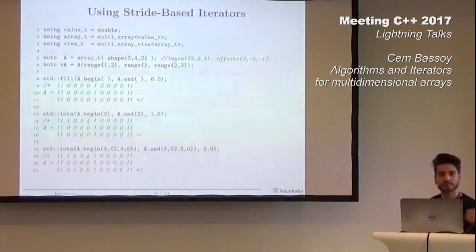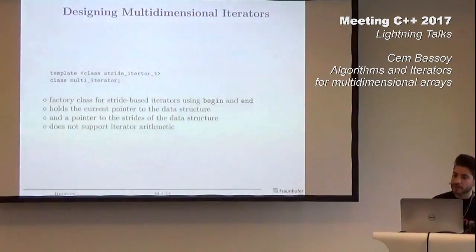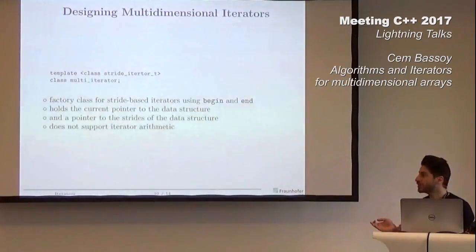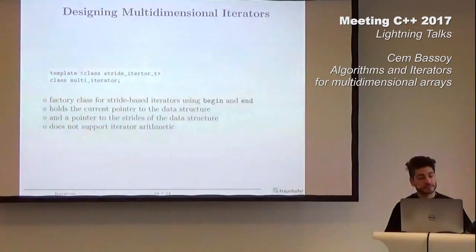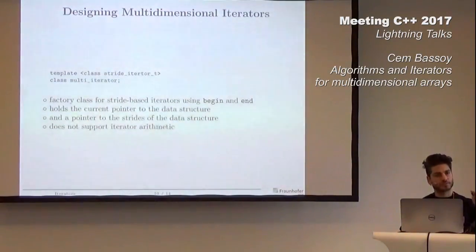Now we can define our multidimensional iterators. The multidimensional iterator is nothing else than a factory class for stride-based iterators. It doesn't hold the stride-based iterators but provides begin and end functions so you can instantiate stride-based iterators. It only holds the current pointer to the data structure and a pointer to the strides of the data structure, so really a thin data structure. It doesn't support iterator arithmetic, so it's up to the stride-based iterator to iterate over the specific dimension.